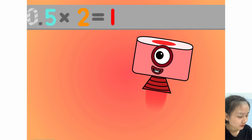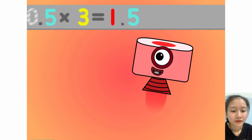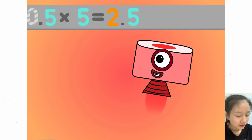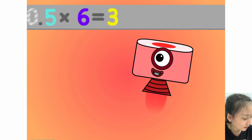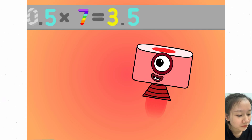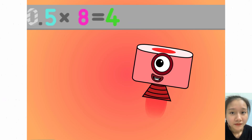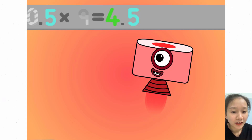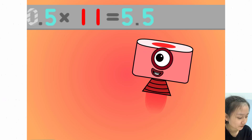0.5 times 2 equals 1. 0.5 times 3 equals 1.5. 0.5 times 4 equals 2. 0.5 times 5 equals 2.5. 0.5 times 6 equals 3. 0.5 times 7 equals 3.5. 0.5 times 8 equals 4. 0.5 times 9 equals 4.5. 0.5 times 10 equals 5. 0.5 times 11 equals 5.5.